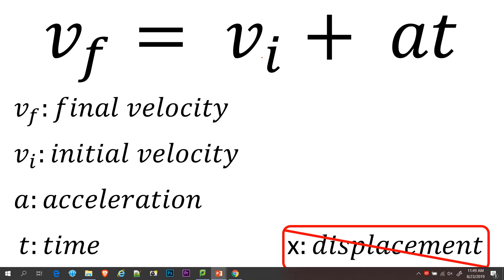What you need to realize is you have VF, VI, A, and T, and you don't have a displacement. So that's going to be important in choosing what equation to use. VF stands for final velocity, VI initial velocity, A acceleration, and T stands for time.